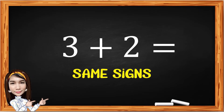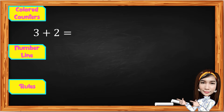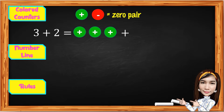Let's start with 3 plus 2. They are the same sign — both positive integers. Using colored counters, green represents positive and red represents negative. Two counters, one negative and one positive, form a zero pair, which means they cancel out. Since 3 and 2 are both positive, we use green counters only. We have 3 green counters plus another 2 green counters. Combining and counting all green counters gives a result of 5.